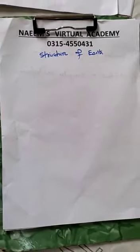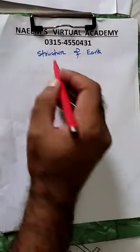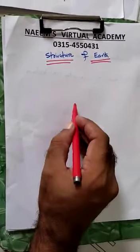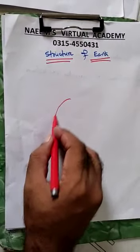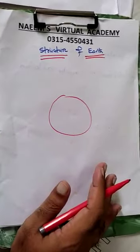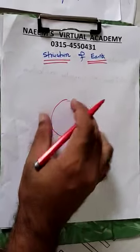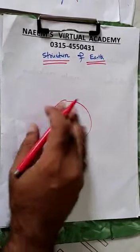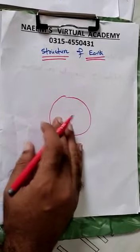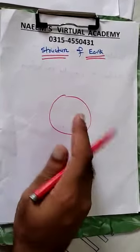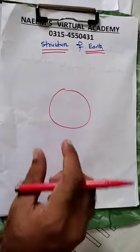Hello. This is the topic of the structure of the Earth. The Earth is basically made up of three layers.